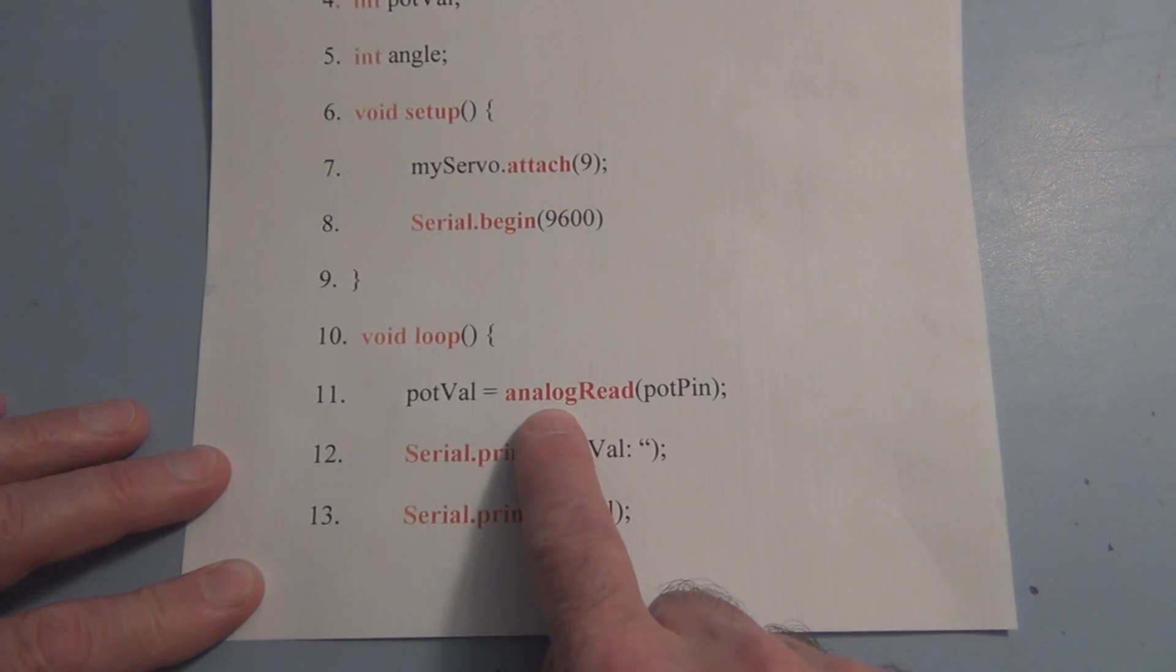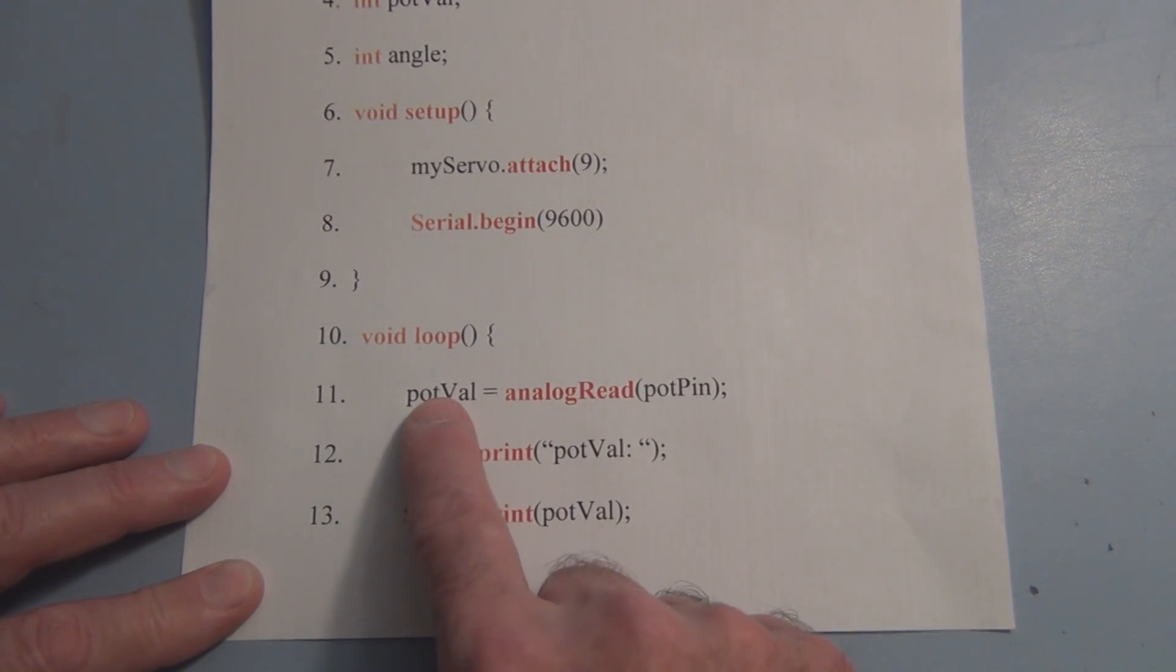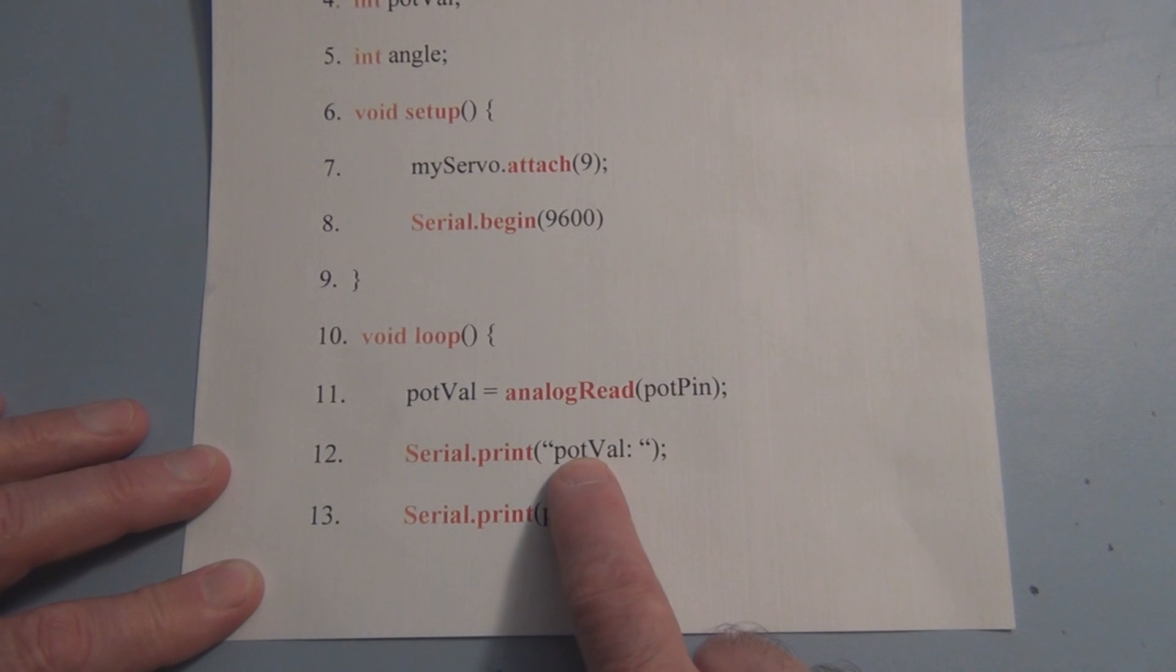In this loop we use analogRead to convert the analog value measured at potPin to a digital value in the range of 0 to 1023 and store that value in the variable potVal and then again we're going to Serial.print text potVal and then the contents of the variable potVal in the serial monitor program.